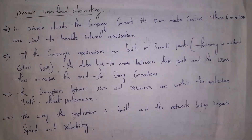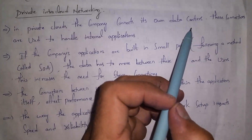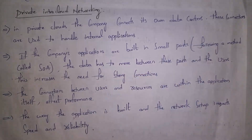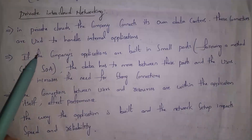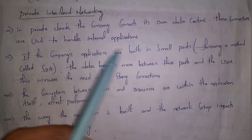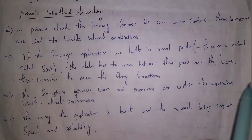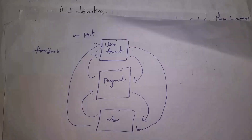Next, I will explain private intra-cloud networking. In a private cloud, companies contain their own data centers — data centers are the physical locations where servers are stored. The complete company's data and internal applications are stored in the company's data center. If a company's applications are built in small parts, the data has to move between these parts and the users, which increases the need for strong connections.